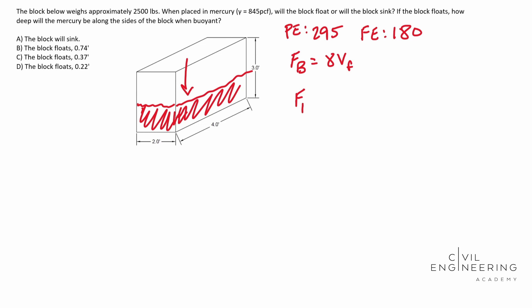So our FB in this case, for it to float, it's going to have to be 2,500 pounds. Our gamma mercury, it gives us that gamma mercury is equal to 845 PCF. And remember, just in case, if they don't give this to you and they only give you specific gravity, remember that specific gravity is just times the specific weight of water. And that's how you get your specific weight of anything. So good, good little snippet to remember.